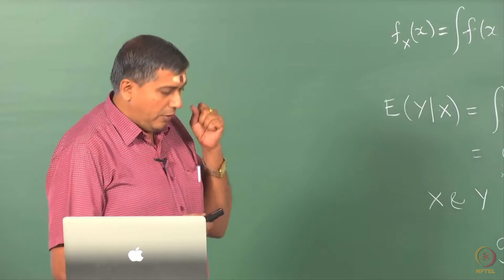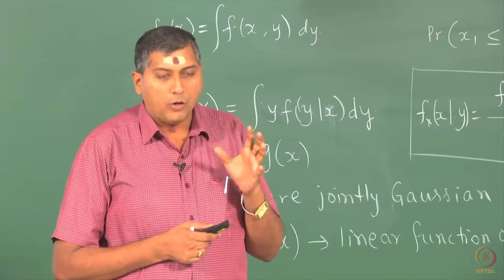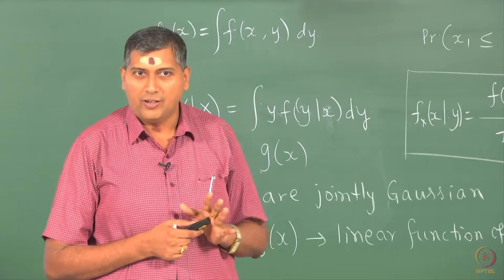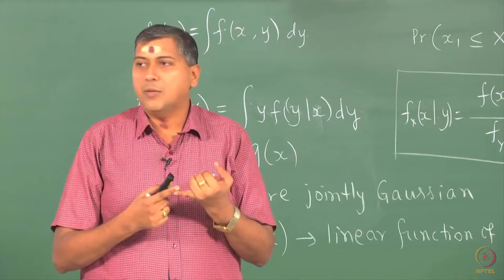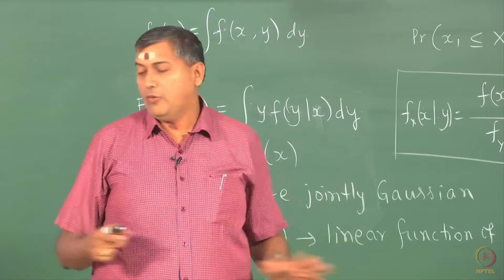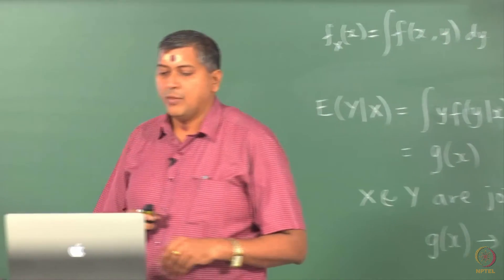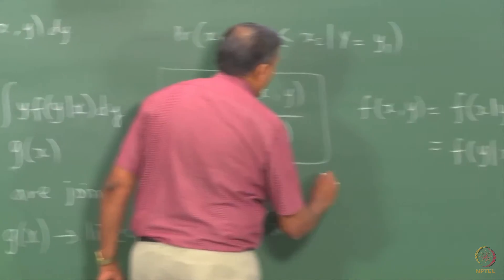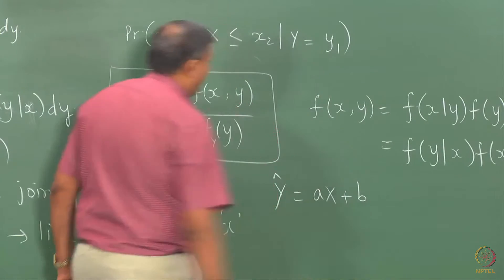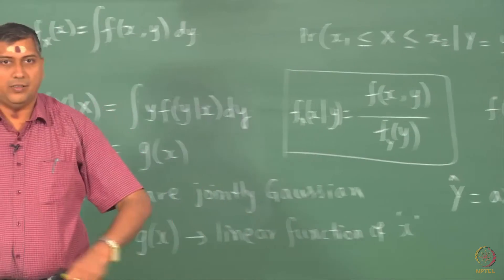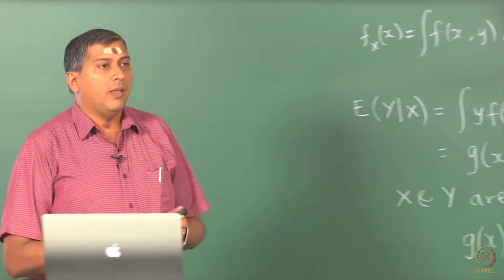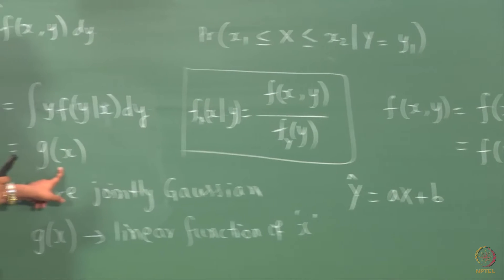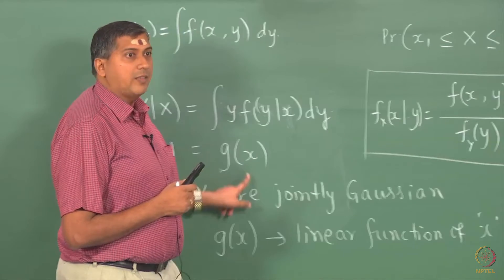The bad news is in using this result is we do not have generally the knowledge of conditional densities or joint densities, but there is good news in some situations and that situation is when x and y are jointly Gaussian. When x and y are jointly Gaussian, what we mean by that is x and y have a joint Gaussian distribution, then you can show theoretically that g(x) is a linear function of x and that forms the backbone of many of the linear models that we study in this course. We can prove it and you can prove it. You can prove it means it will be a part of your assignment.